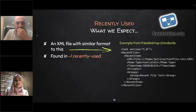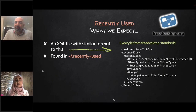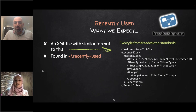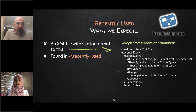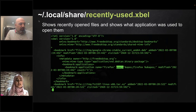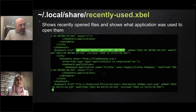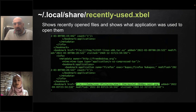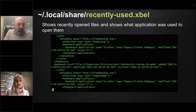The next artifact is the recently used file. This XML file, called recently-used.xbel, contains records of files the user has opened. It stores the filename, file type, when it was opened, which application opened it, and how many times it was opened. You can use this to prove what files the user opened and used on the system. It's stored in the user's home directory under .local/share.